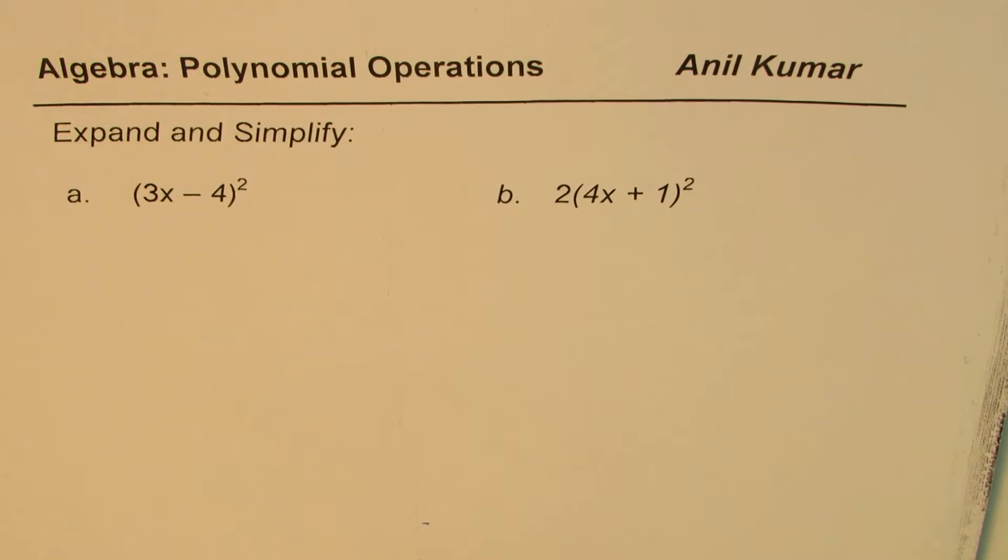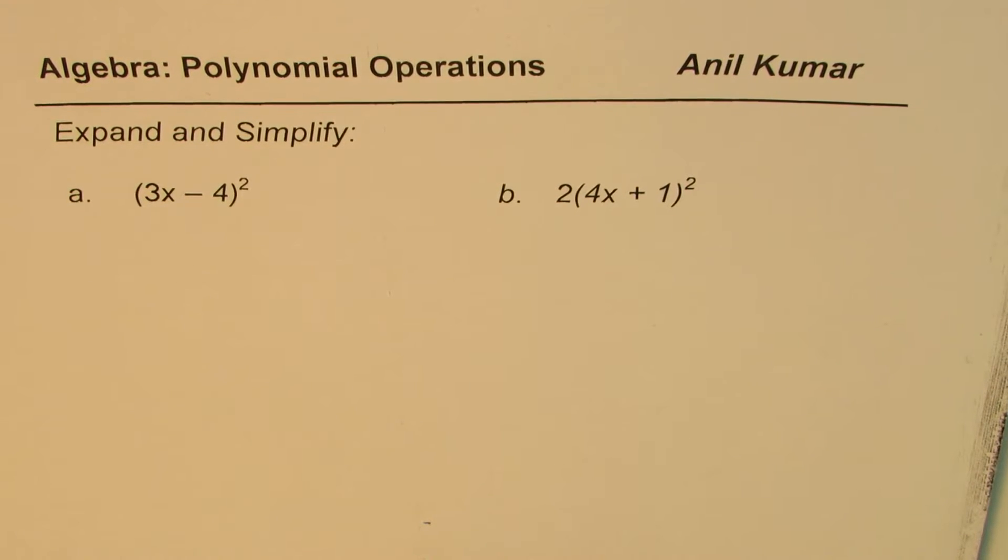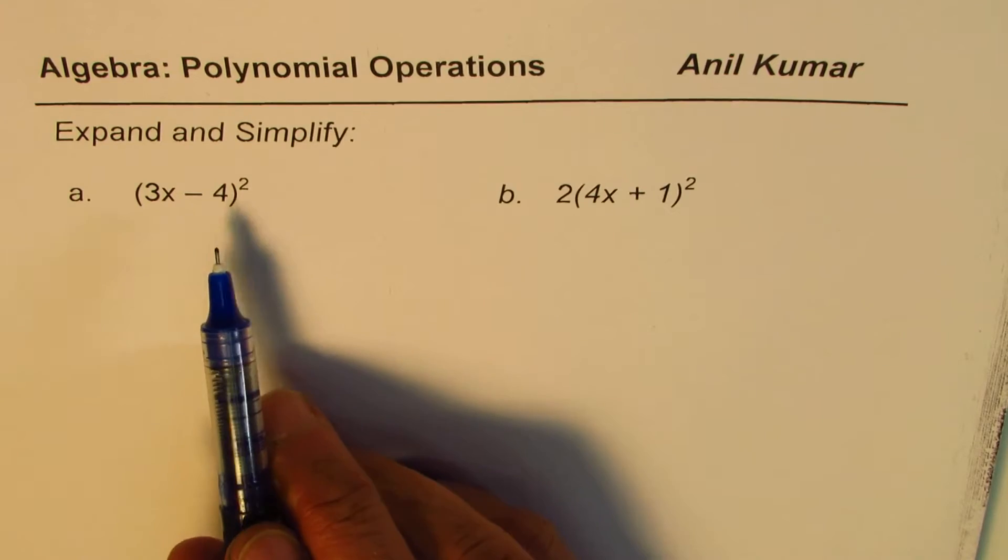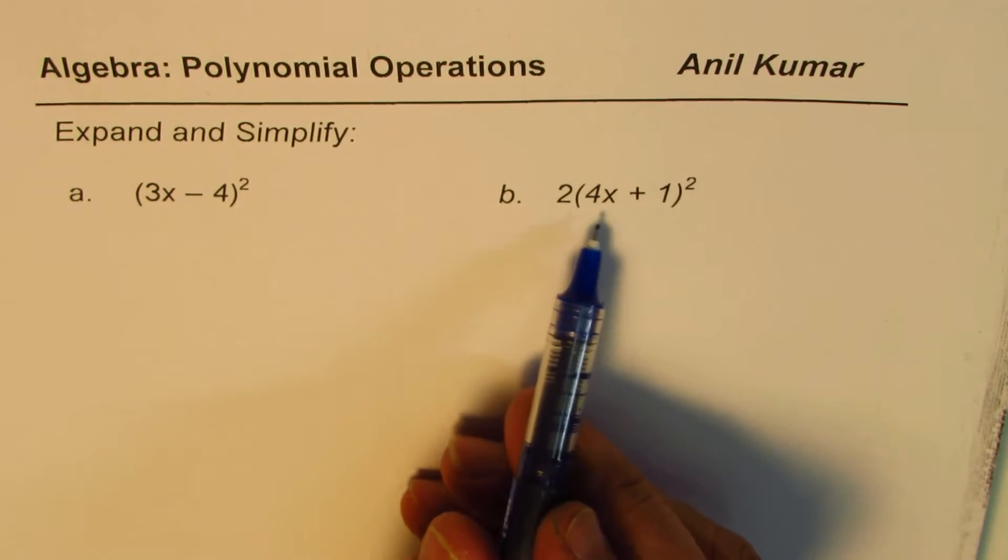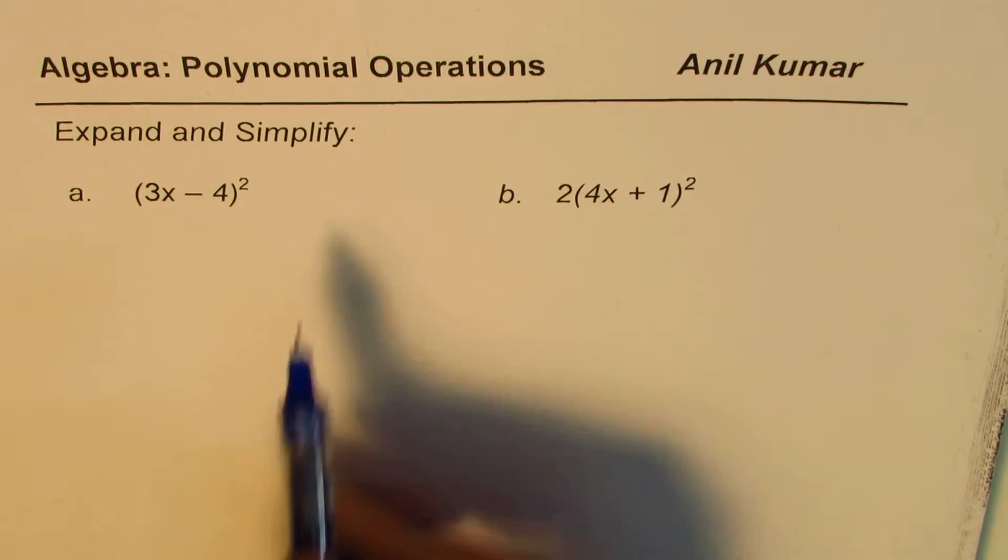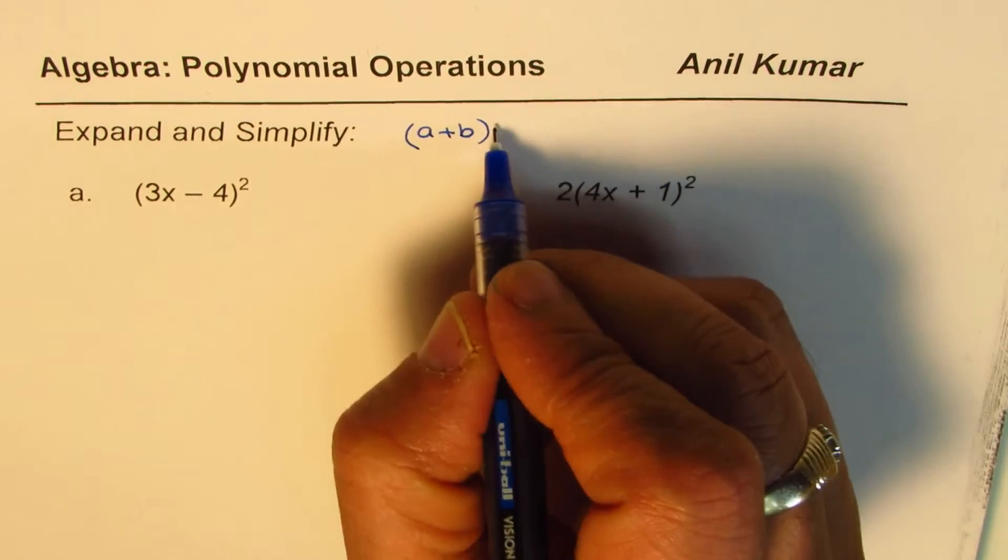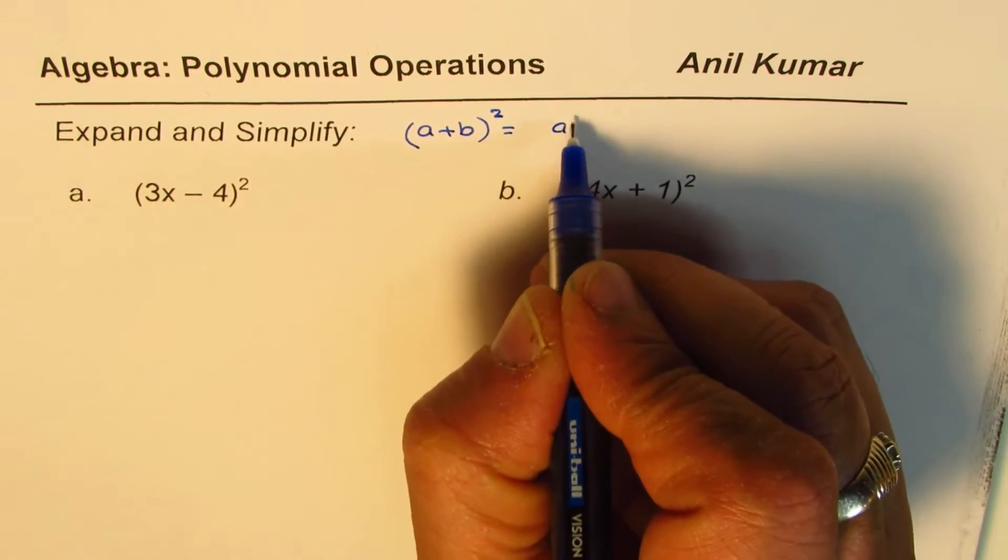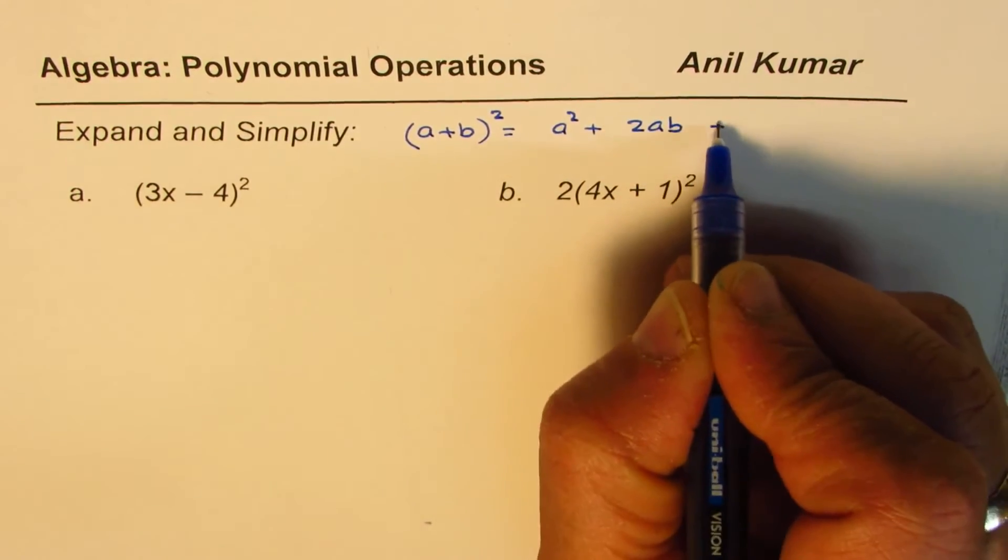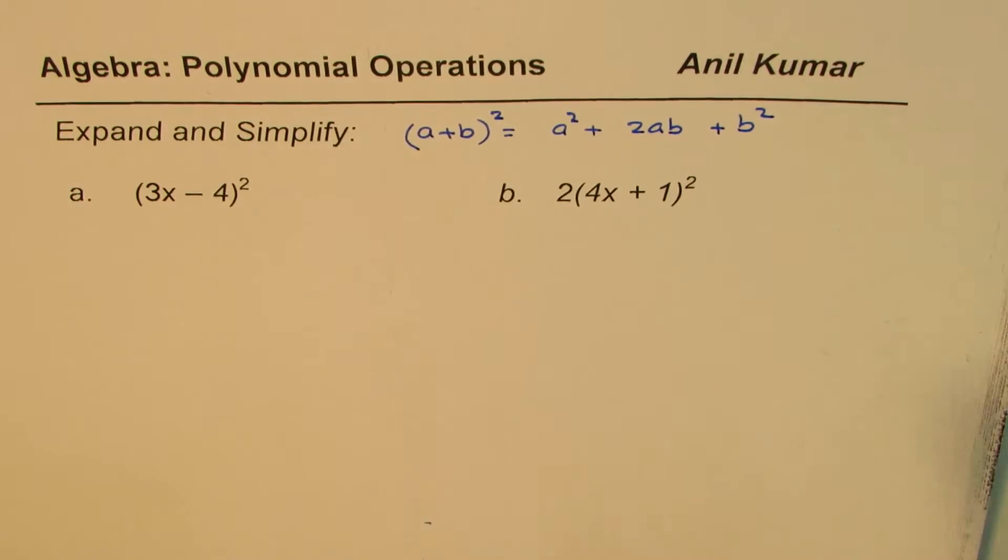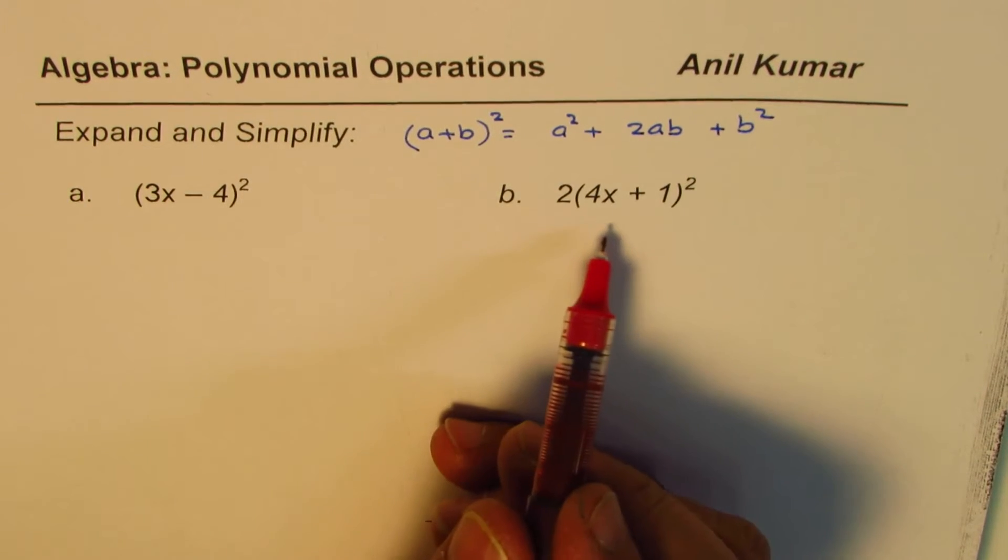I'm Anil Kumar sharing with you a video on polynomial operations. In this particular video, we will learn how to expand the square of a term. So I hope you remember the formula which is (a+b)² which could be written as a² + 2ab + b².